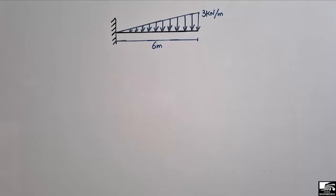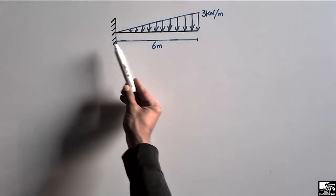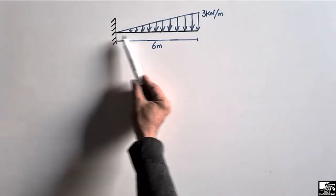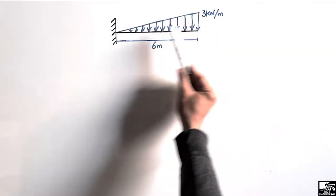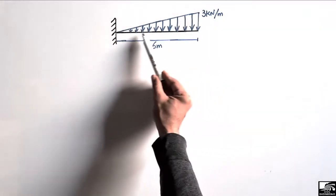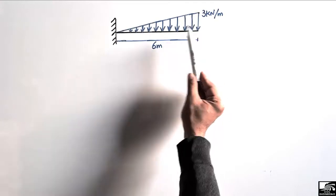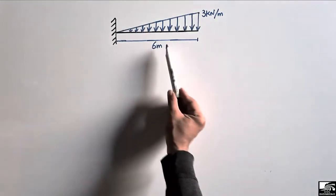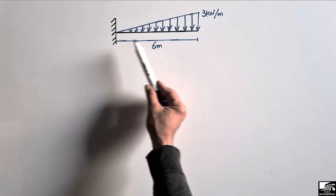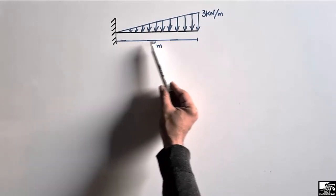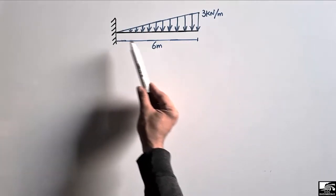Hello guys, welcome back to the Civil Engineering YouTube channel. Please subscribe for engineering videos. Today we are going to analyze a cantilever beam with a uniformly varying load — a triangular load acting on this cantilever beam. The beam length is 6 meters. We are going to find out the support reactions and draw the shear force and bending moment diagram for this cantilever beam.